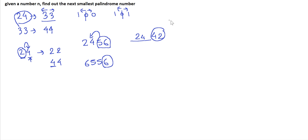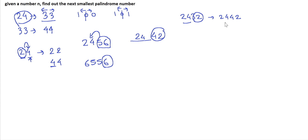For example, if the input is 2432, reversing the left part and replacing the right side gives 2442, which is greater than the original number — so that is the answer. However, if the input is 2456, the same operation again gives 2442, which is not greater than 2456, so that is not the right answer.